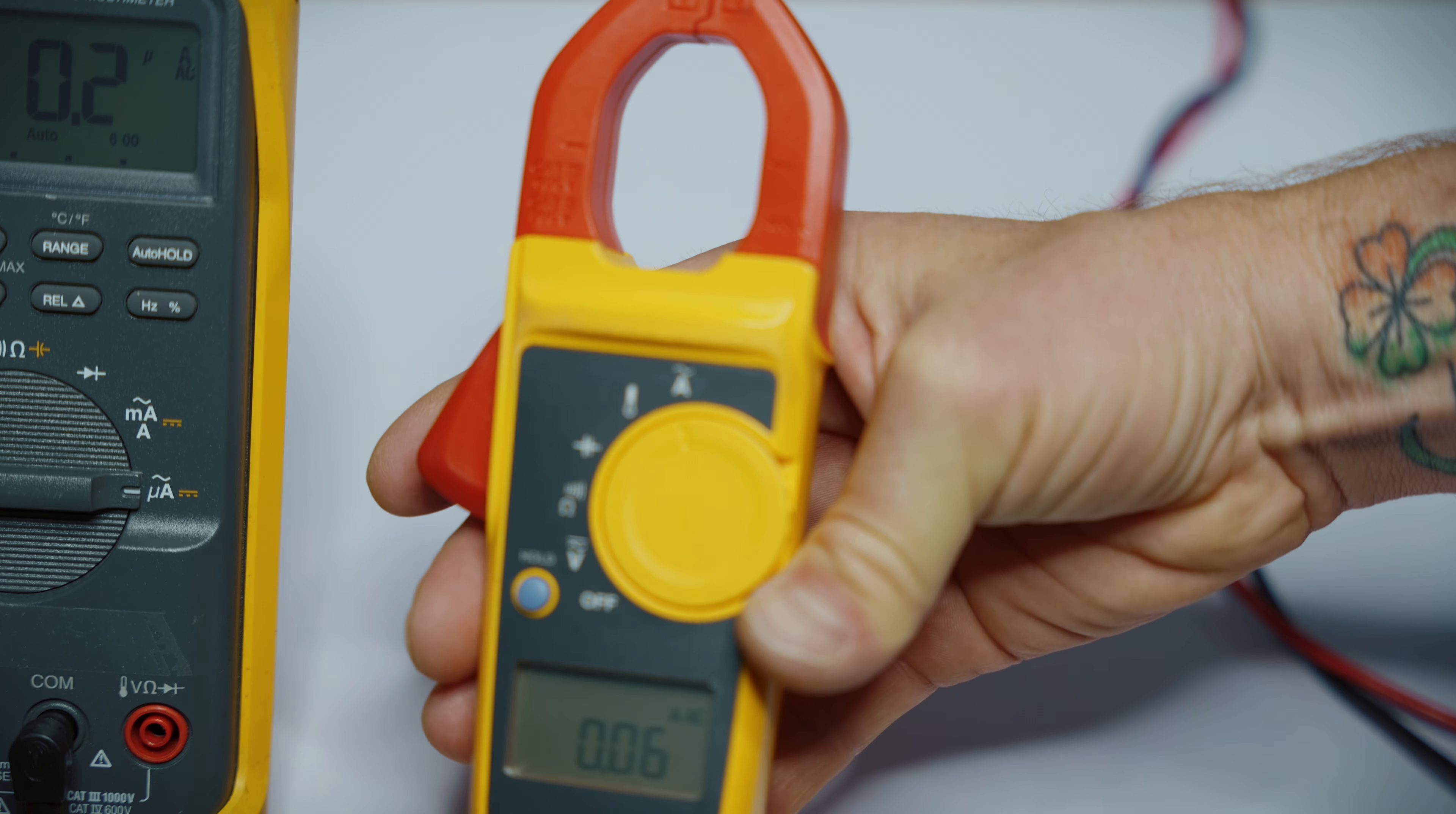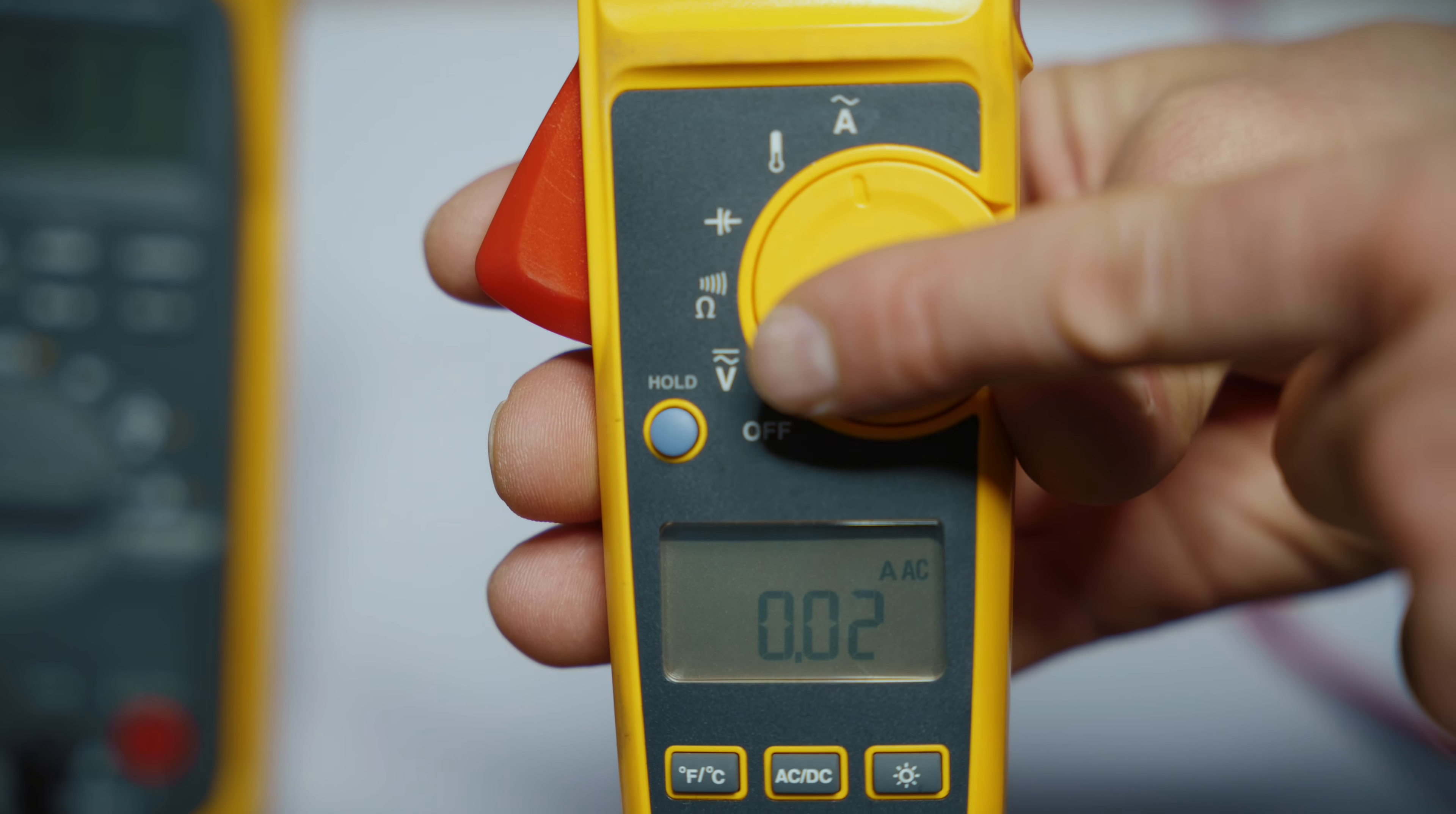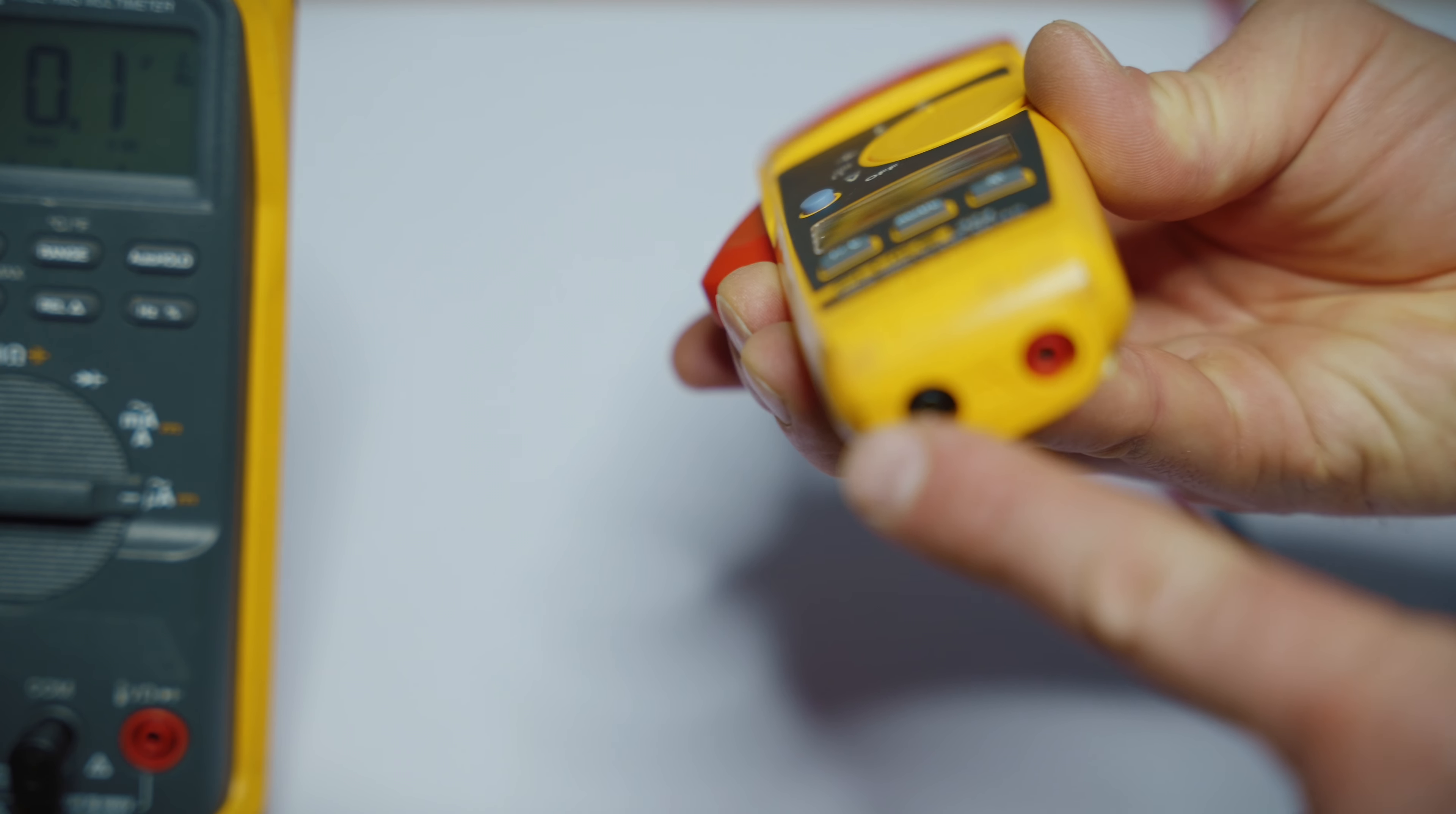Now another option for checking amperages, and actually this is much safer because you don't have to disconnect anything from the circuit. You simply clamp this around the wire that you want to check the amps. As you can see, you can test the AC amperage there. You have temperature, you have your diode, you have your resistance and continuity again, and your volts AC and DC.